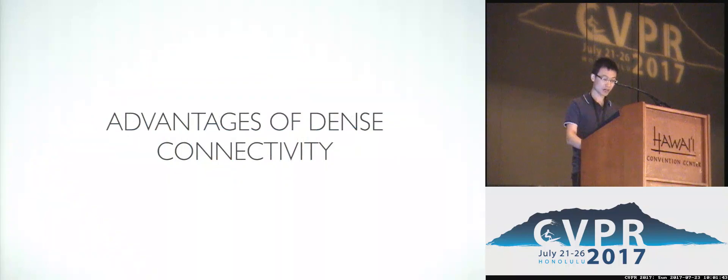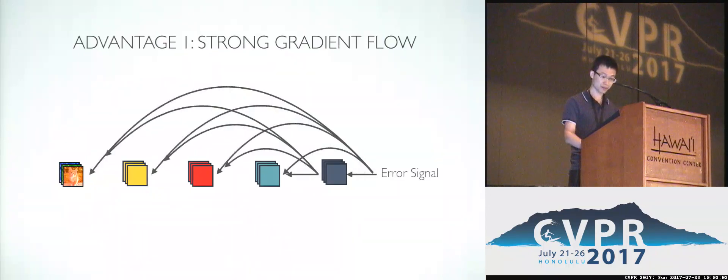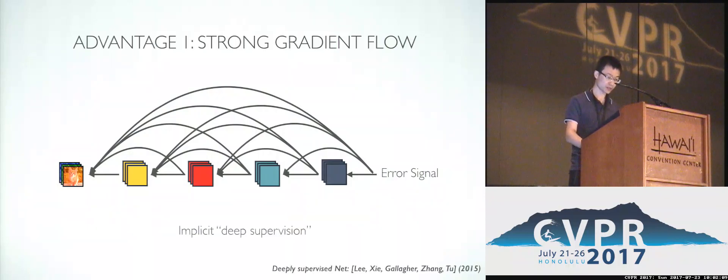You may wonder, we already have the amazing ResNet architecture, why we bother to use a new network architecture. Here we summarize several prominent advantages of DenseNet. The first clear advantage is in a DenseNet, the error signal can be easily propagated to earlier layers more directly. This is a kind of implicit deep supervision, as earlier layers can get more direct supervision from the final classification layer.